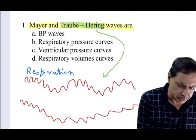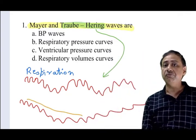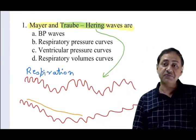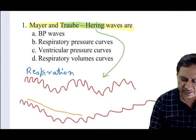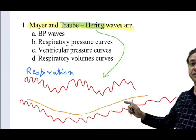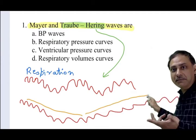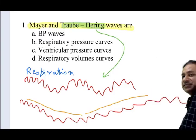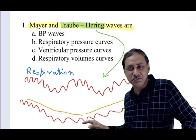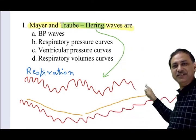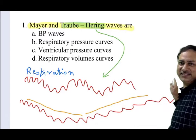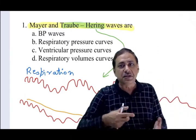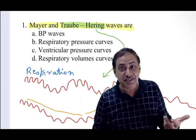Just see — BP becomes low. What will the Baroreflex do? The BP control mechanism will try to increase it. It is increased more than required. Now the Baroreceptor will start decreasing it, then increasing it again, then decreasing, then increasing — because of these feedback oscillations in a control system, BP fluctuates again.